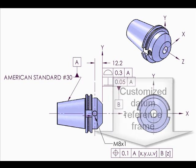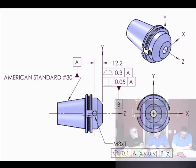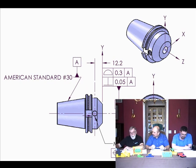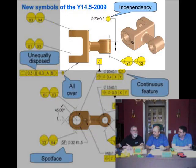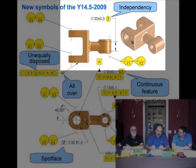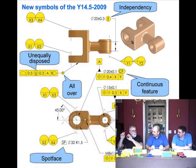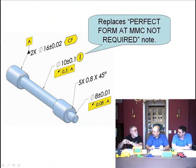The other thing that we've done is we've added new symbols. Oh, how many are there? I believe there's seven new symbols, but the one that stands out for me is the principle of independency symbol. Instead of having to write a long note about that, we don't do that anymore. Now we have a symbol that says we want these two features to be unlocked from rule number one. We don't have to worry about size controls form anymore.